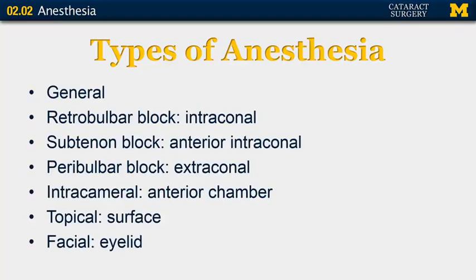There are seven different types of anesthesia that are used in cataract surgery: general, retrobulbar block, subtenons block, peribulbar, intracameral, topical, and facial.